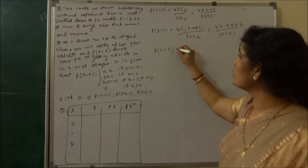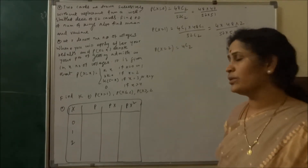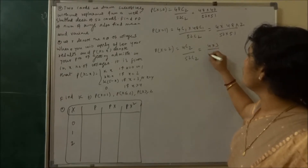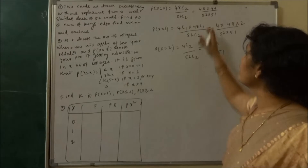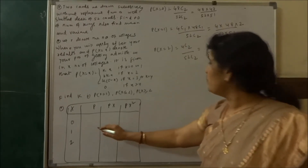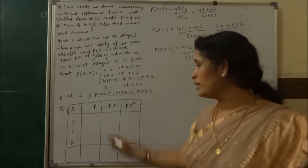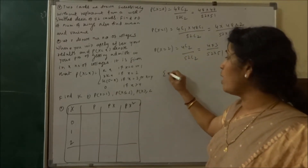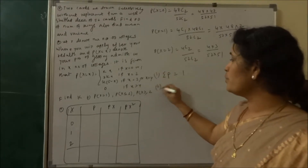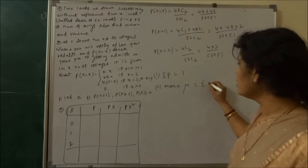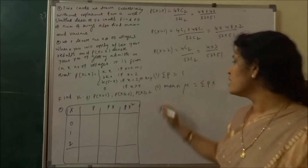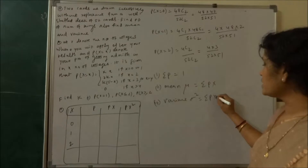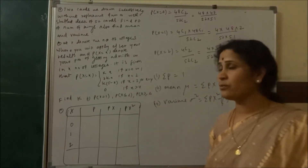Probability of x equal to 2 means both cards are Kings: 4C2 upon 52C2, which equals 4×3 upon 52×51. After computing all probabilities, fill in the table. Verify that summation p equals 1. Then find the mean using µ = Σ(p·x), and the variance using σ² = Σ(p·x²) − µ².